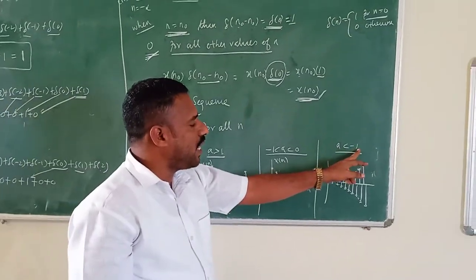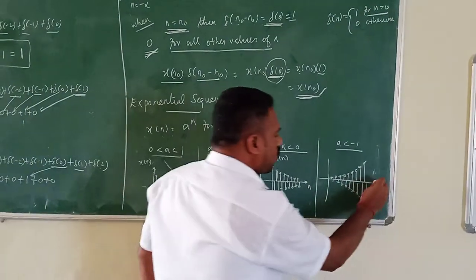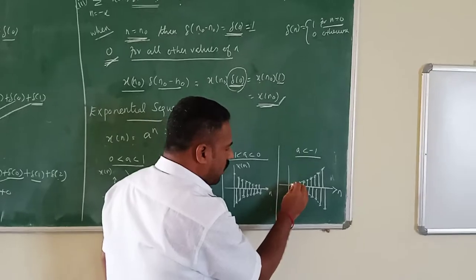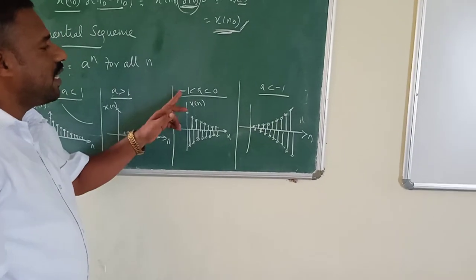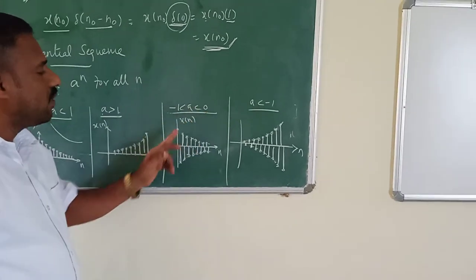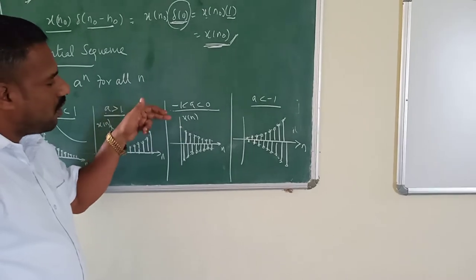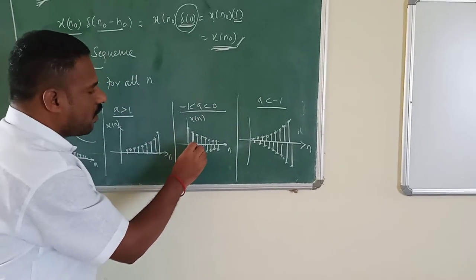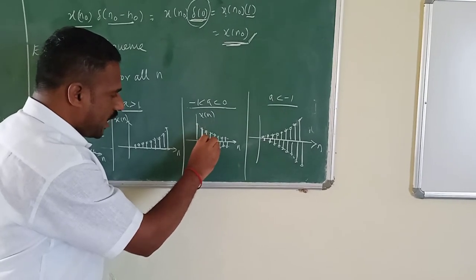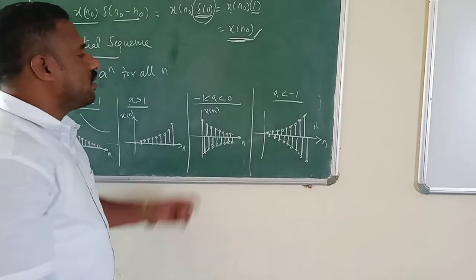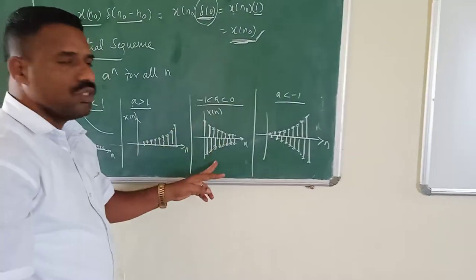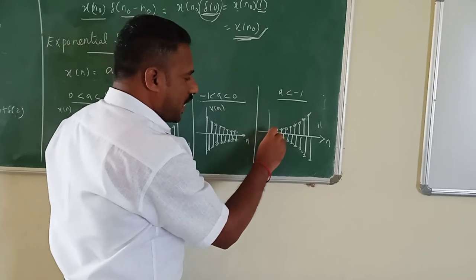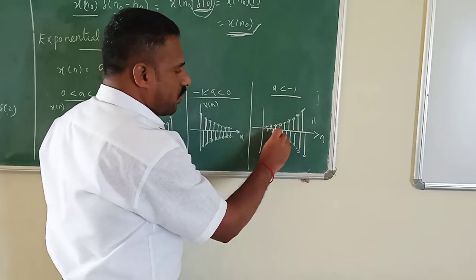The last case is when a is less than minus 1: you get an increasing exponential curve in both sides — positive and negative — in a zigzag manner. So one value is positive, another is negative, alternating in an increasing pattern. This is the exponential sequence for a less than minus 1.